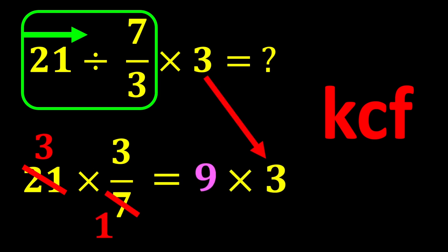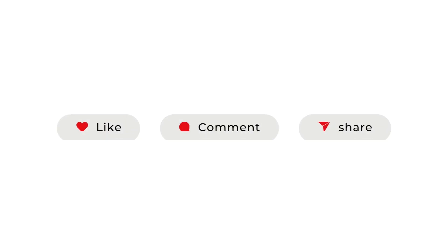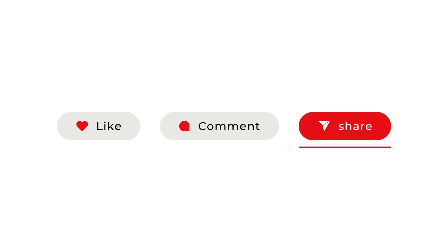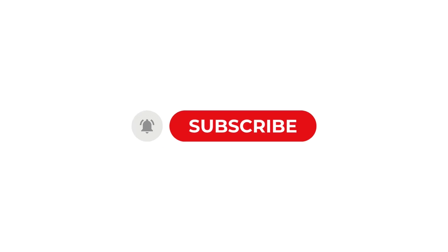Finally, 9 multiplied by 3 equals 27, which is our final answer. Thank you for watching this video. If you enjoyed it, like the video. If you have any questions, ask them in the comments, and I will definitely answer. Share it with your friends and subscribe to the channel.